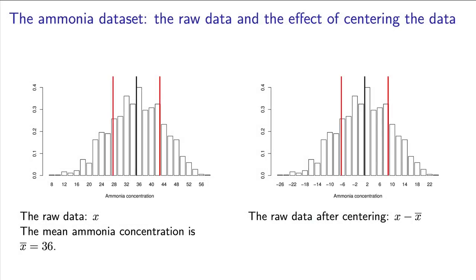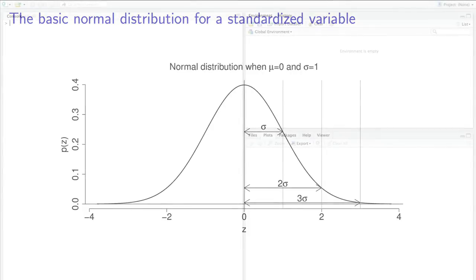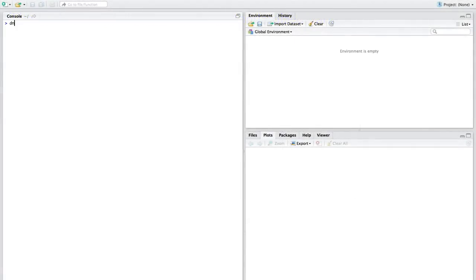So, back to the normal distribution. The standard normal distribution is centered at zero. And at that point, we have the highest probability, a value of around 0.4 of obtaining values. You can confirm this in R for yourself.